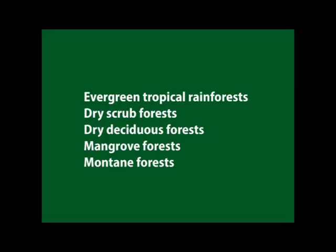Deciduous forests consist of trees that lose their leaves during colder seasons. Mangrove forests consist of tropical evergreen trees that can be recognised by roots that look like stilts lifting the trees above the water. These trees grow in slow-moving water. Montane forests are those found in mountain areas.